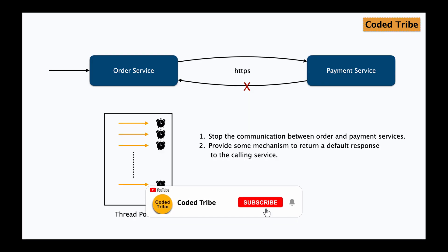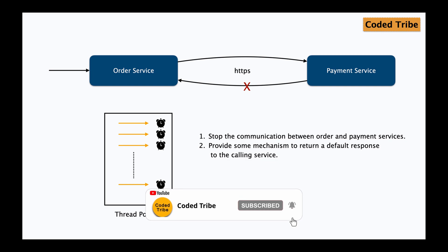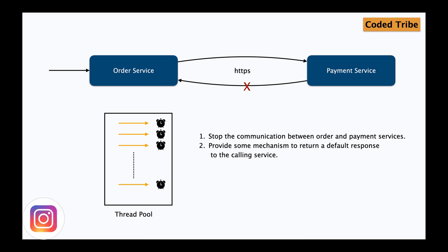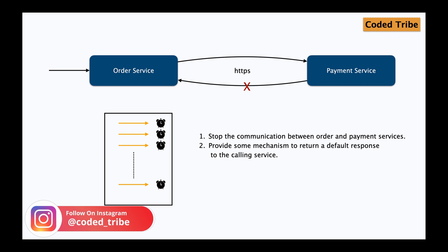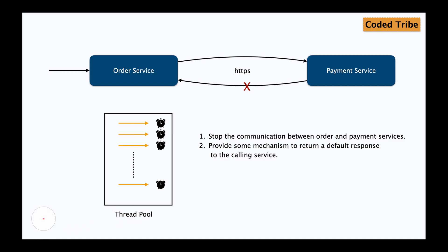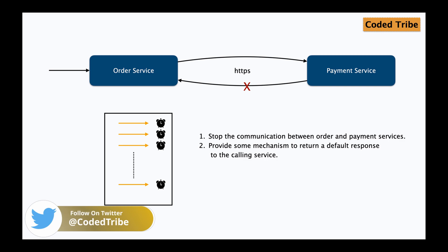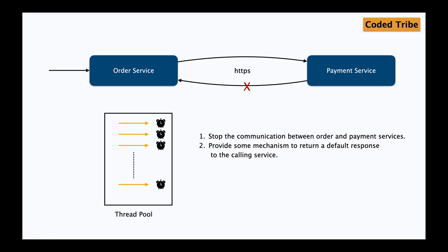The solution is to stop this cascading behavior. In a microservices architecture, intermittent failures in some services are very likely, but in those situations we can't keep bombarding requests to services that are not responding. What we can do is: first, stop the communication to the service that is not working; and second, instead of invoking that service which is down, return a default message saying that the service is down, please try again after some time — some kind of failover default response.